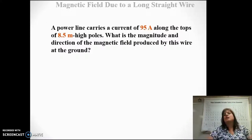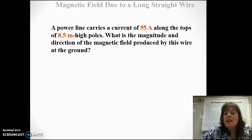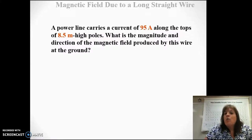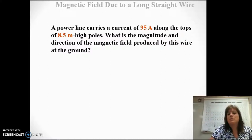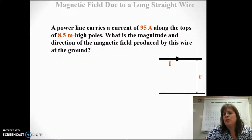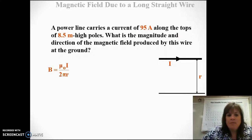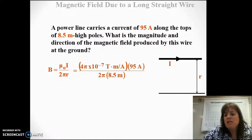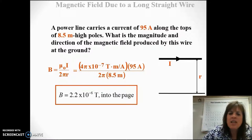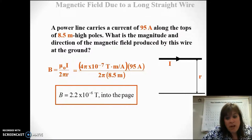Let's take a look at an example. Power lines carry current and they produce magnetic fields. If we have a power line carrying 95 amps of current and the poles are 8.5 meters off the ground, what is the magnitude and direction of the magnetic field produced by this wire? Our current is flowing to the right. Using Biot-Savart's law, we multiply our permeability constant by 95 and divide by 2π times the distance, 8.5 meters. You should get 2.2 times 10 to the negative 6 Tesla. And if you did your direction right, you should get into the page.